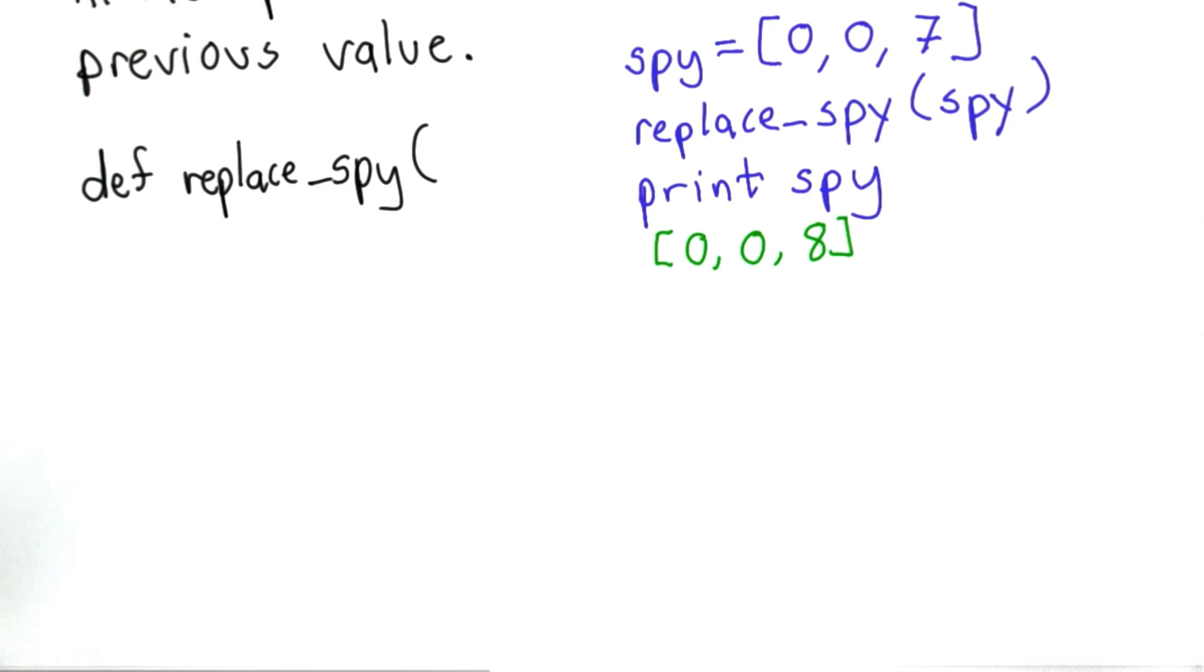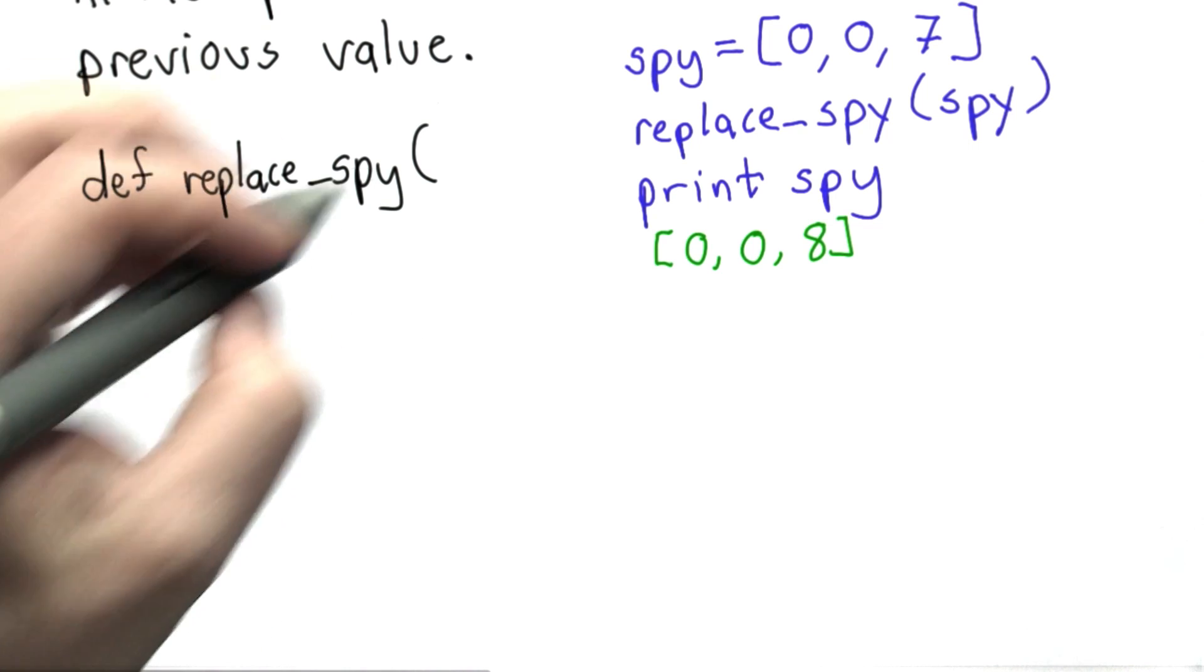So here's the answer. We can define a procedure named replaceSpy. It takes one parameter as its input. I'll call the parameter p.